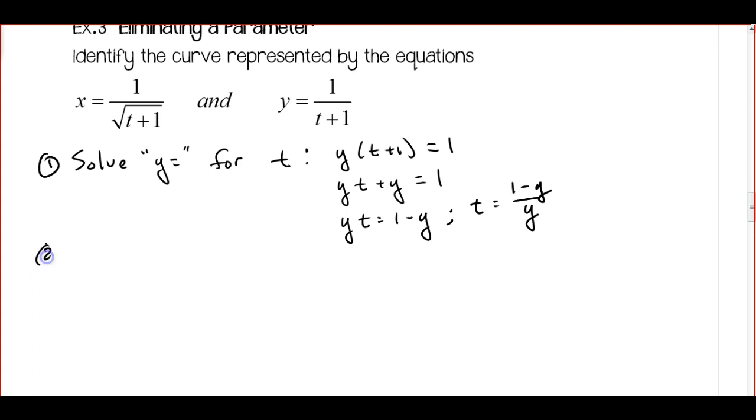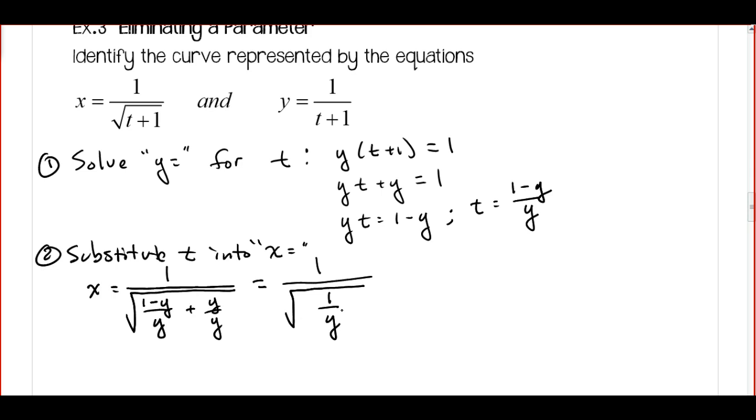Step 2, I'm going to substitute T into X equals. So I get X is equal to 1 over the square root of 1 minus Y over Y. And I'm going to make that 1 Y over Y so I have a common denominator. That's going to give me 1 over the square root of 1 over Y. Then I'm going to square both sides to get rid of that square root. So I get X squared is equal to 1 over 1 over Y, which means Y is equal to X squared.